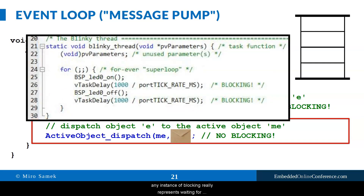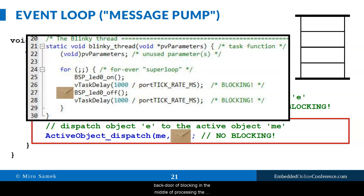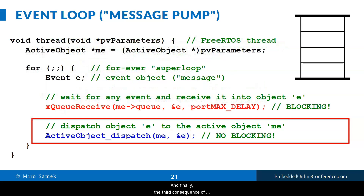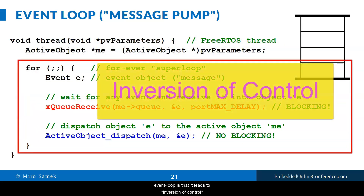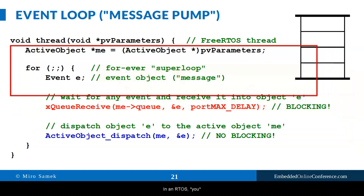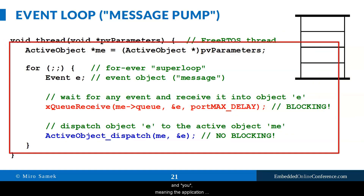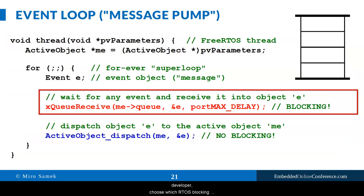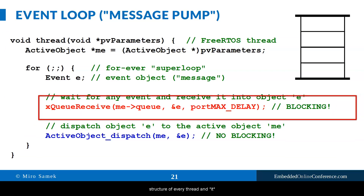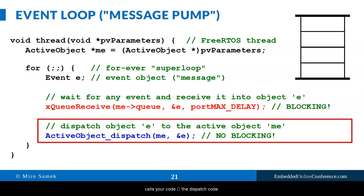Any instance of blocking really represents waiting for an event, and unblocking represents reception of the awaited event. But such an event would then arrive through the backdoor of blocking in the middle of processing of the original event from the queue — so you would now process two events at a time, thus violating the RTC semantics of event processing. The third consequence of the event loop is that it leads to inversion of control compared to the traditional RTOS. In an RTOS, you write the body of each thread and choose which RTOS blocking mechanisms you employ. Event loop reverses this because it predetermines the structure of every thread and calls your dispatch code — and you are no longer allowed to use any RTOS blocking mechanisms in that code.